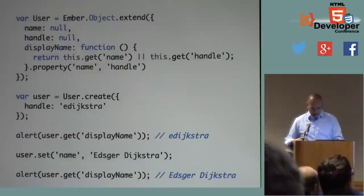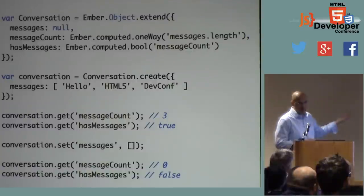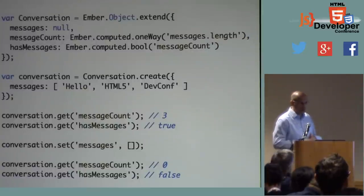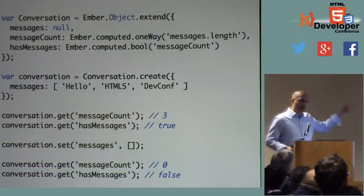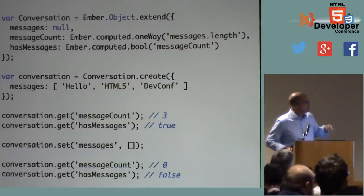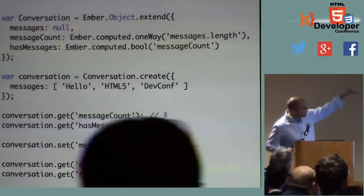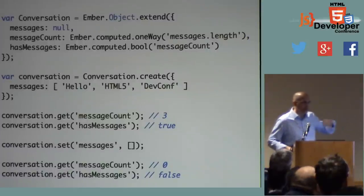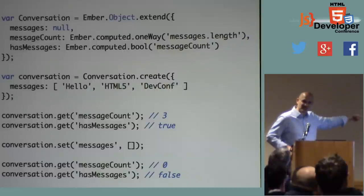This gets really cool with a more complex example. Say we have a conversation object with an array of messages — null by default but eventually an array. The second property is message count, basically the number of items in the messages array, which can itself be observed. Similarly, has messages is a Boolean that derives from message count: if message count is zero, that converts to false, but any other number converts to true.